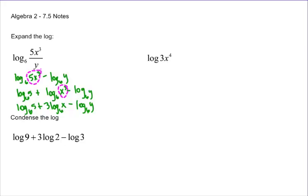Over here, log of 3x to the fourth. This is just going to be log three plus log x to the fourth. It's multiplication. Then that four has to come to the front. So I have log three plus four log x. There's that guy.